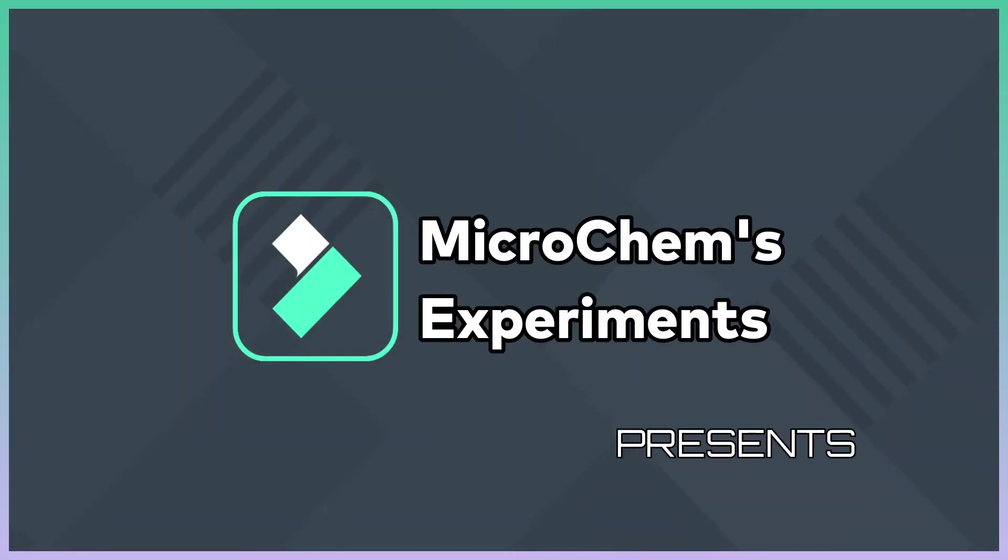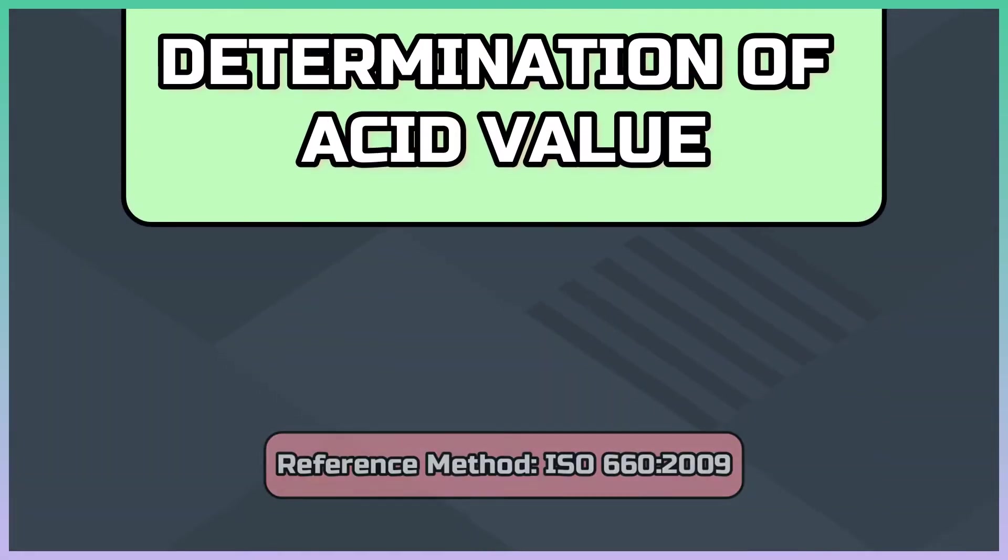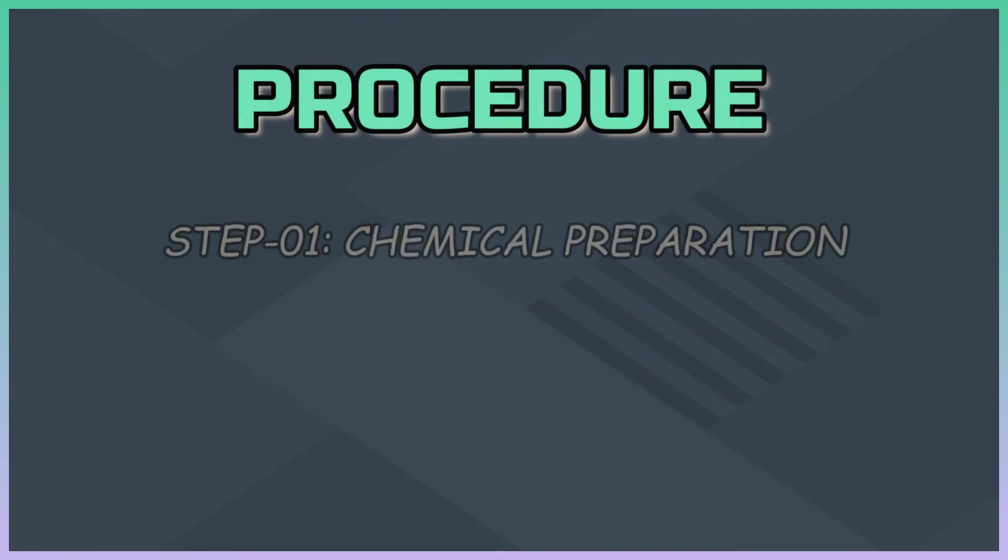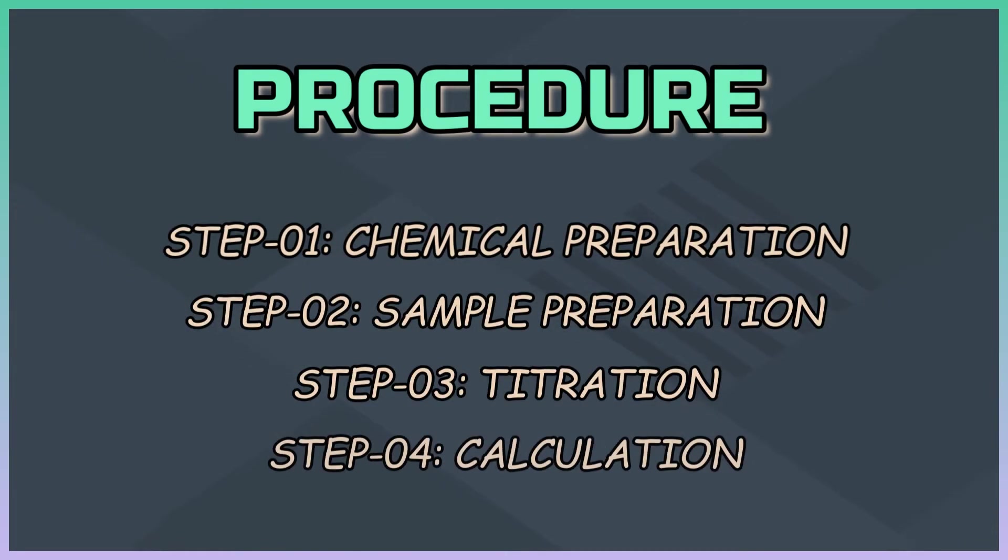Welcome to Micro Games Experiments. Subscribe to the channel to be a laboratory expert. In this video, we are going to conduct an experiment to determine the acid value of an oil sample. The test involves four steps: chemical preparation, sample preparation, titration, and calculation.